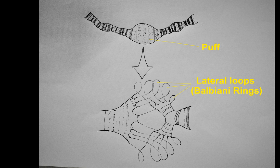Polytene chromosomes are found in various tissues such as the salivary gland, rectal and Malpighian excretory tubules in the larvae of some flies, as well as in several species of protozoans and plants.